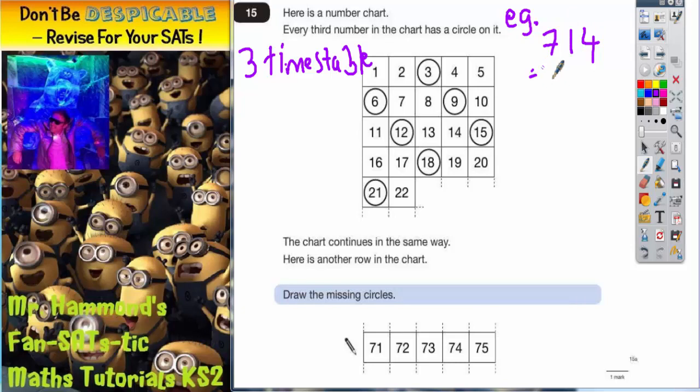So the total of the digits is 12 and 12 is in the 3 times table. So I know that if the total of the digits is in the 3 times table, I know that the entire number is in the 3 times table.